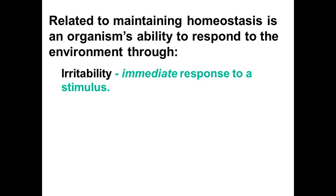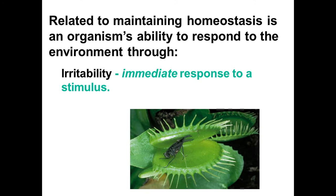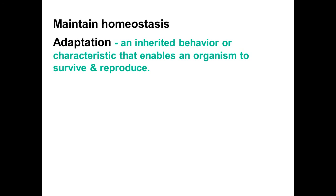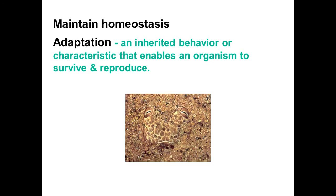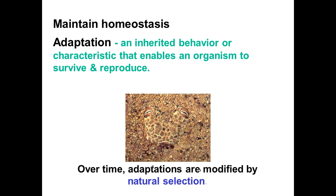Related to maintaining homeostasis is an organism's ability to respond to its environment. It can respond through irritability — an immediate response to a stimulus — like an insect getting caught in a Venus flytrap. As soon as it triggers the little hair on the Venus flytrap, the flytrap closes. That's irritability. Or through adaptation: an inherited behavior or characteristic that enables an organism to survive and reproduce, such as camouflage. This organism is extremely well camouflaged in its surroundings, helping it both catch prey and avoid being eaten by predators. Over time, adaptations can be modified through natural selection, which we'll get to at the end of our course.